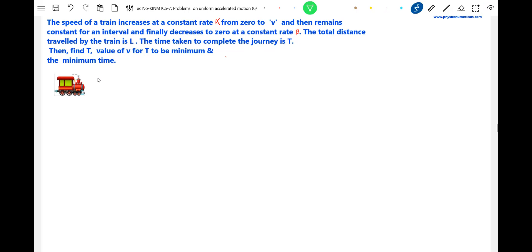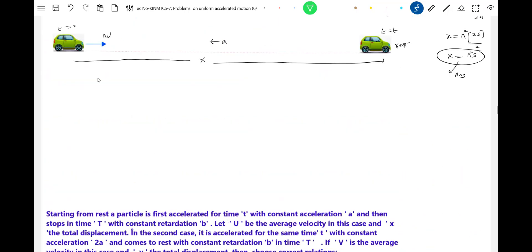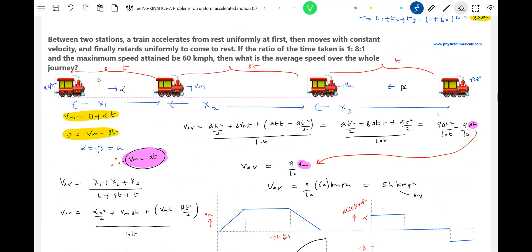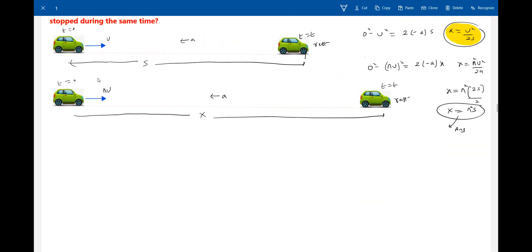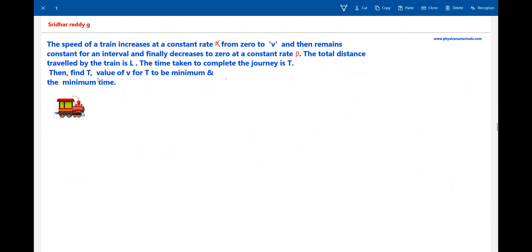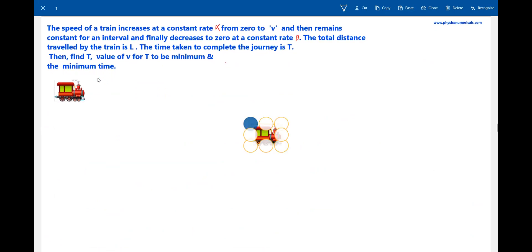Okay, now the individual train is there. We'll take this train. It will initially accelerate, then moves with uniform velocity, and finally it returns and comes to rest.